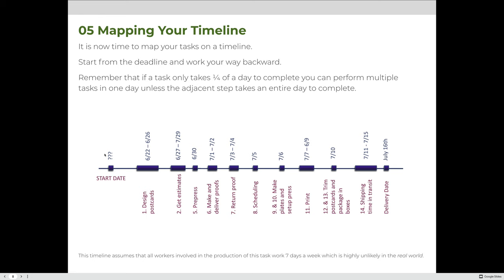So if a client comes to us in April, say April 6th, and asks if we can get this job done, we can absolutely say yes. We can tell them that if they want delivery to Des Moines by July 16th, they need to have everything submitted and the contract signed by June 1st. If they say they can't get files to us until June 16th, we can still make the deadline. But if they come to us on July 7th asking for delivery by July 16th, we have to tell them there's no way to finish in time.